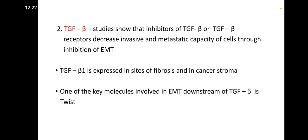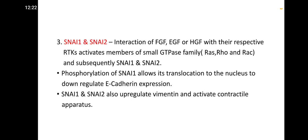TGF-beta studies show that inhibitors of TGF-beta or its receptors decrease the invasive and metastatic capacity of cells through inhibition of EMT. TGF-beta-1 is expressed in sites of fibrosis and in cancer. One of the key downstream molecules of TGF-beta involved in EMT is Twist.